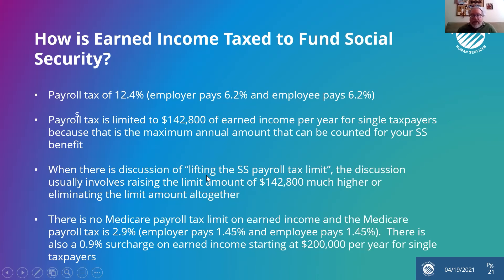Medicare is different — there is no income cap on the Medicare payroll tax. The Medicare payroll tax is 2.9%, again split 50-50, and there is an additional surcharge on earned income starting at $200,000 per year for single taxpayers. So Medicare has already made this leap — if you're getting $200,000 or $500,000 a year in earned income, you're paying a scalable Medicare payroll tax up to that level with a surcharge attached. Medicare is a different system than Social Security in that regard.